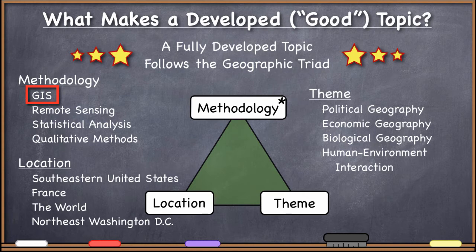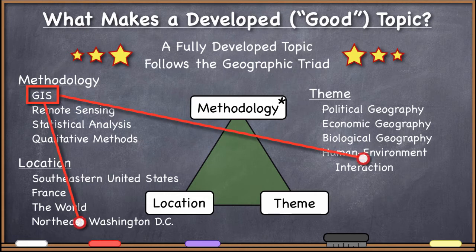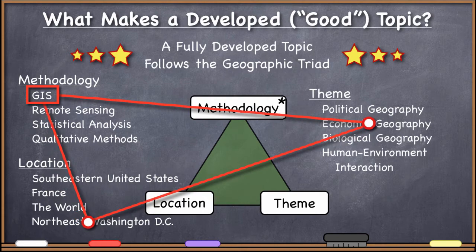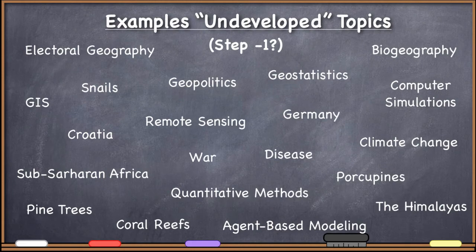Probably many people doing this already know the methodology they want to use — GIS — either because you're interested in using computers to solve geographic problems in general, or because you already have a theme and a location and a crisp, clear question, and you realize that using computers to solve it would be an excellent approach. So we talk about a GIS study of northeastern Washington DC's human-environment interactions, a GIS study of the biological geography of France, or a GIS analysis of the economic geography of some place.